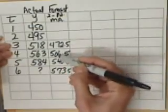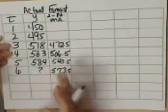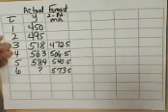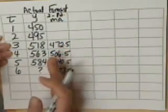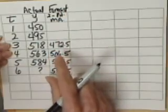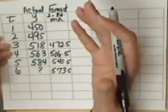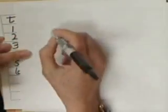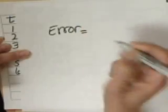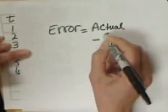You might ask why we're making forecasts of what we already know happened in the past. The reason is so that we can compute a measure of accuracy for how good this forecasting model is. In order to do that, we need to know what our error is. Error is always: actual minus forecast.